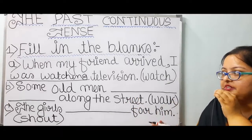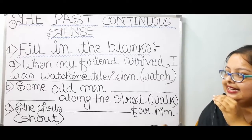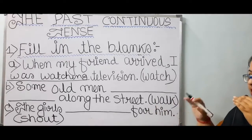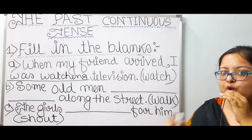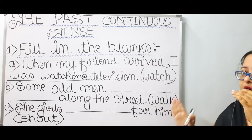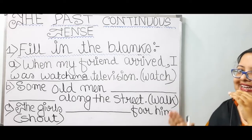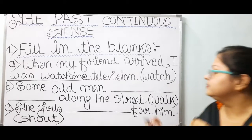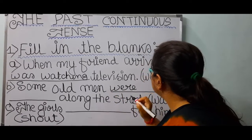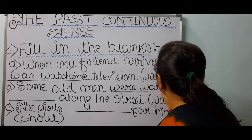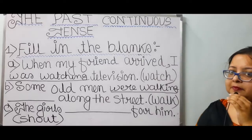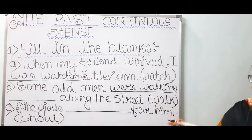When my friend arrived, I was watching television. Number B: Some old men dash along the street — were walking. 'Men' is plural in number, so 'were' is used. According to the rule, first form of verb plus -ing: walk + ing = walking. Were walking. Some old men were walking along the street.